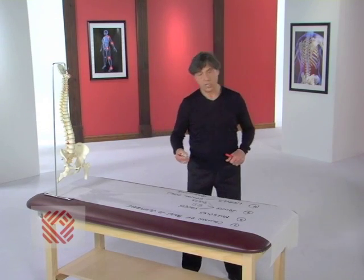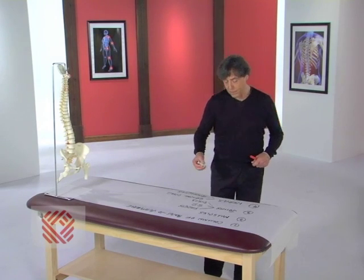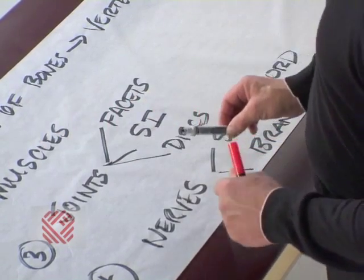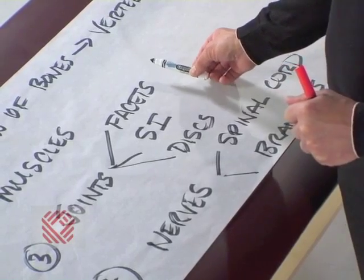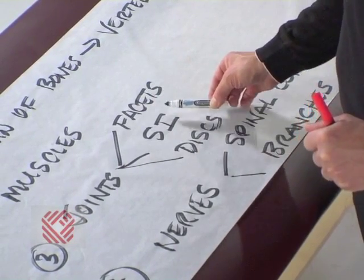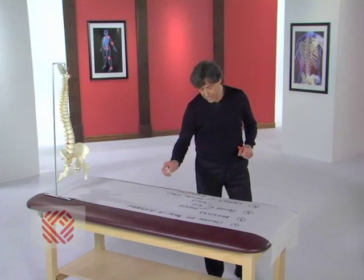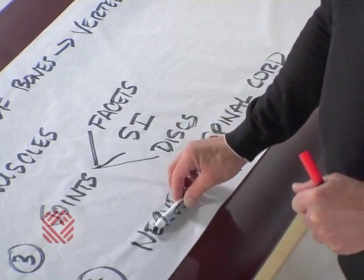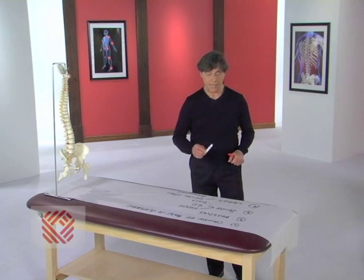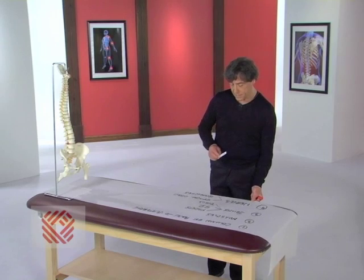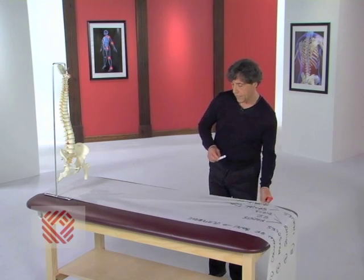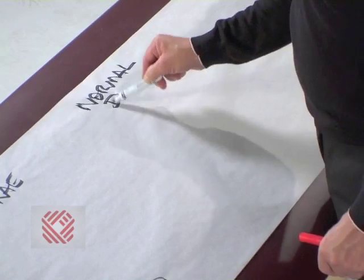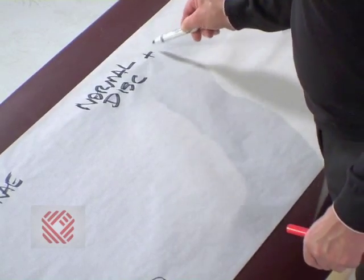In previous shows, we talked about abnormalities that cause pain in the muscles. We talked about abnormalities and problems that cause pain in the facets and the sacroiliac joints. Today, we're going to talk about problems in the discs and the nerves that can produce back pain. Let's look at a normal disc and nerve.